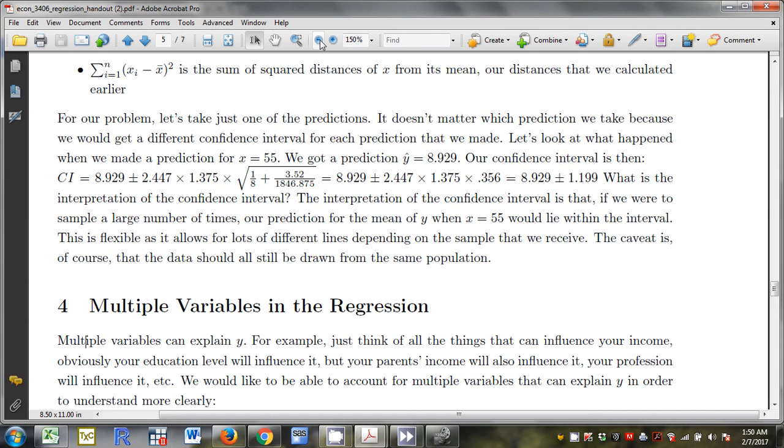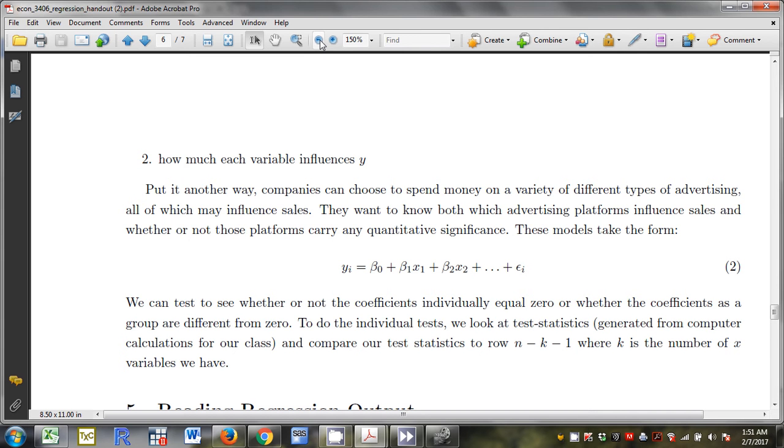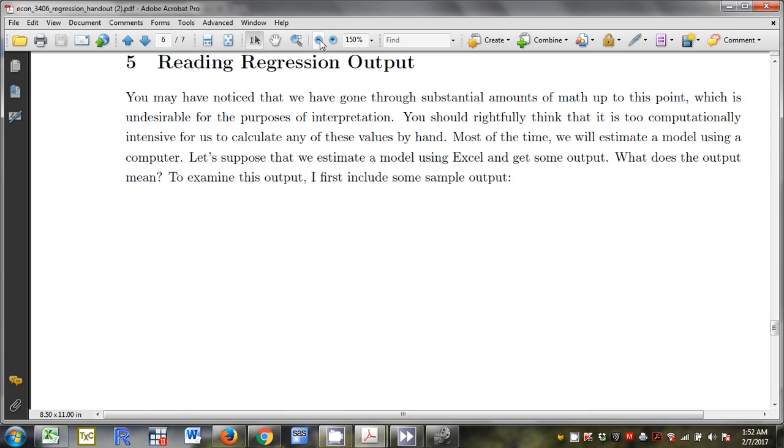Now we're going to skip confidence intervals for now, but what I do want to talk about is having multiple variables in the regression. We're eventually going to do this in Excel, but right now I just want to talk about it conceptually. Multiple variables can explain why. Think of all the things that can influence your income. Your education level is going to influence it, so your parents' income, so what high school you went, so what profession you choose, etc. I would like to ideally control for all of these at once. I'd like to know which variables influence why and how much. I've had a lot of trouble finding the slope of one variable. What if we have a bunch of variables? We're going to use Excel.